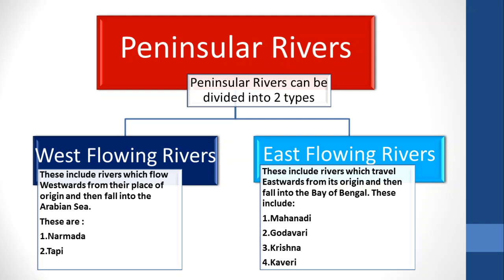Peninsular Rivers can be divided into two types: West Flowing Rivers and East Flowing Rivers. West Flowing Rivers include rivers which flow westward from their place of origin and then fall into the Arabian Sea.